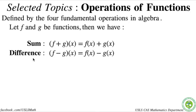Next is difference. The difference is obtained by subtracting one function from another. So we have f minus g of x equals f of x minus g of x. Compared to the sum, addition is commutative, so f plus g and g plus f are the same. But in difference, it really matters — f minus g and g minus f are different. So please take note of that.